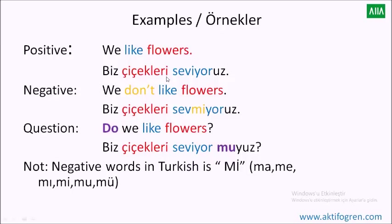For the negative form, in English we use 'don't.' But in Turkish we use one word: 'me' — or its vowel-harmony variants. 'Me' makes the sentence negative all the time — it doesn't matter if it's past, present, or future tense. So: 'sevmiyoruz' means 'we don't like.' Biz, çiçekleri, sevmiyoruz. This object can change; it's up to you which object you use.